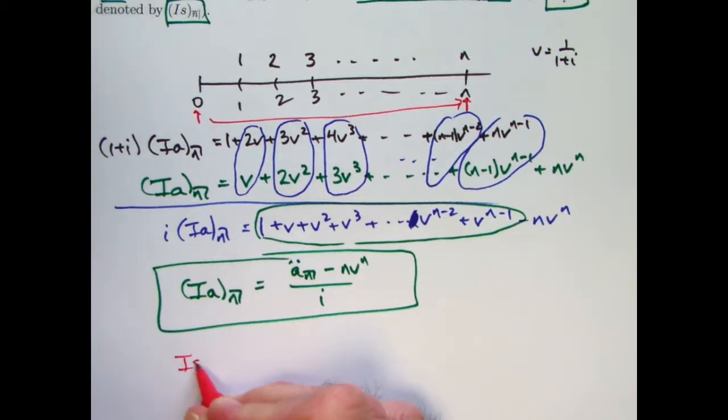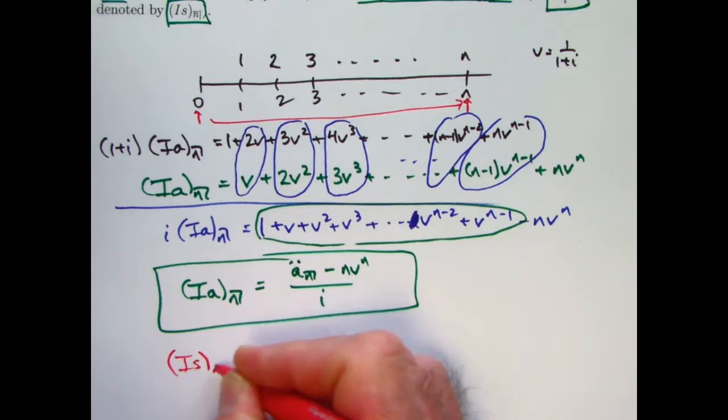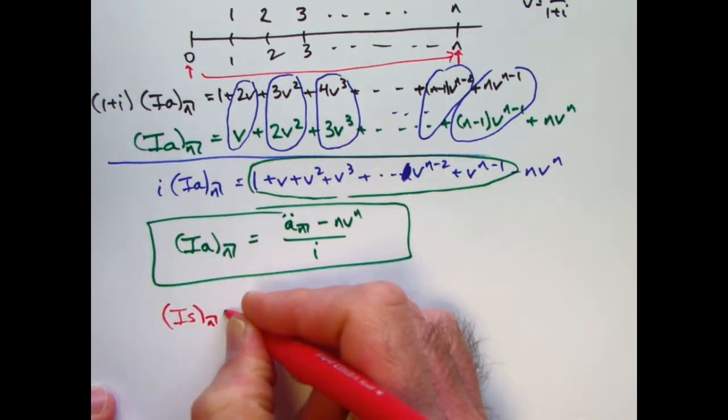So the future value, or accumulated value, (Is)_n of this thing, is going to be 1 plus i to the n times the present value.